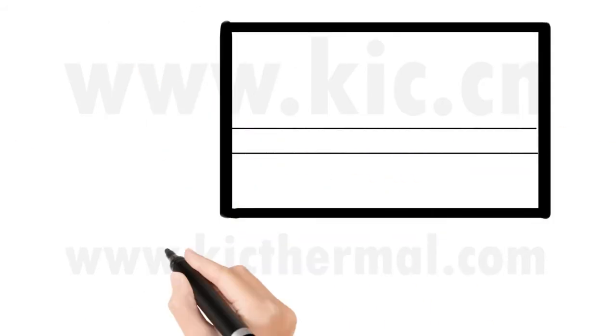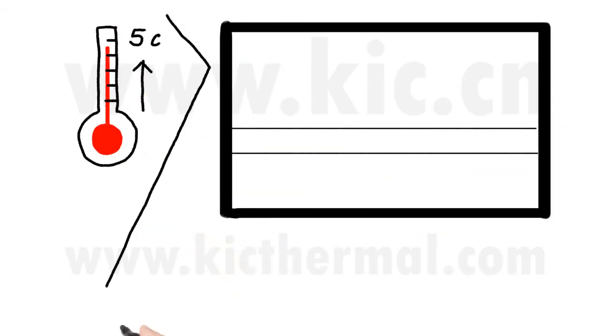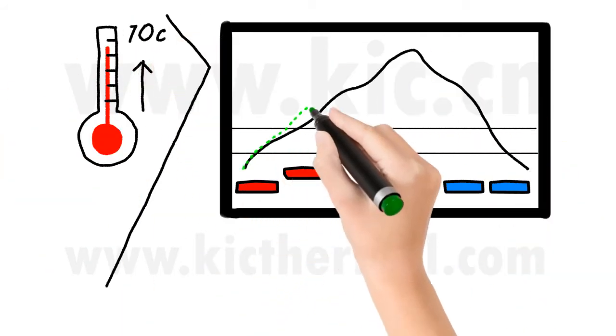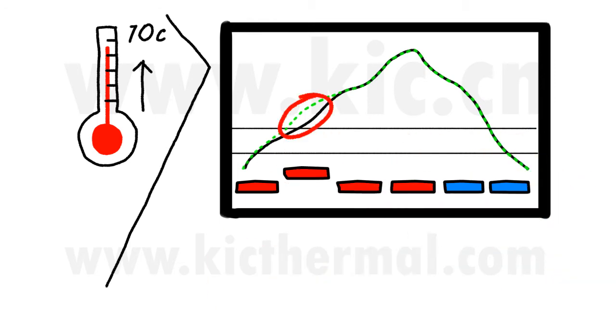If for example, we raise the temperature 5C in the peak zone 4, we can see on the dotted line how our software predicts the profile to change. If we raise the temperature 10C in zone 2, we see the predicted effect to the profile.